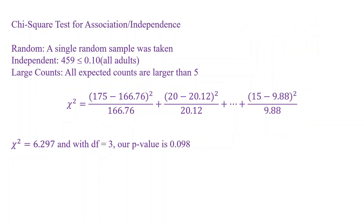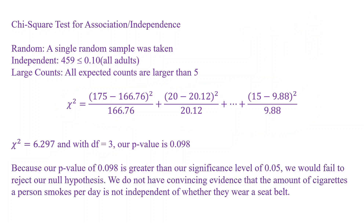Comparing the p-value of 0.098 to our significance level of 0.05, since 0.098 is greater than 0.05, we fail to reject the null hypothesis. We do not have convincing evidence that the amount of cigarettes a person smokes per day is not independent of whether they wear a seatbelt. In other words, we did not find evidence that the two variables depend on each other—not to say they're definitely unrelated, but simply that this test did not provide sufficient evidence.